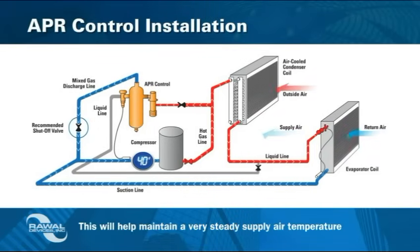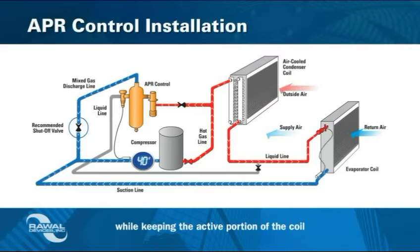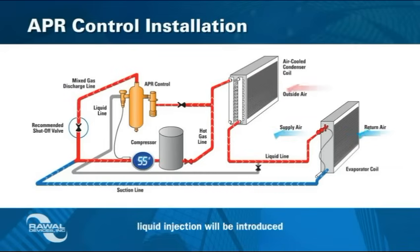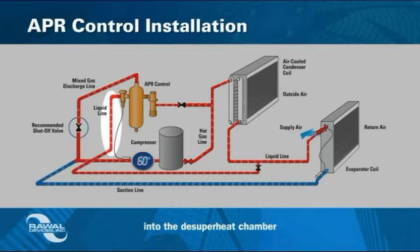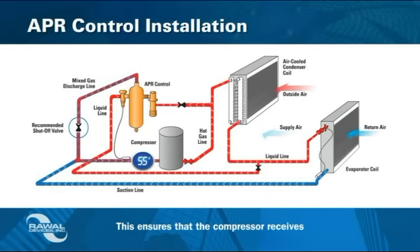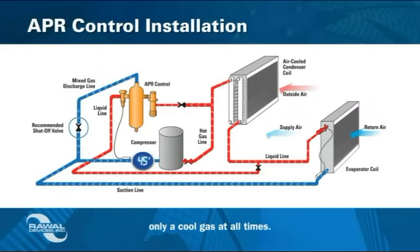This will help maintain a very steady supply air temperature while keeping the active portion of the coil in the dehumidifying mode. As added protection for the compressor, liquid injection will be introduced into the de-superheat chamber if the suction line gas becomes heated enough at deep modulation to adversely affect the compressor superheat. This ensures that the compressor receives only a cool gas at all times.